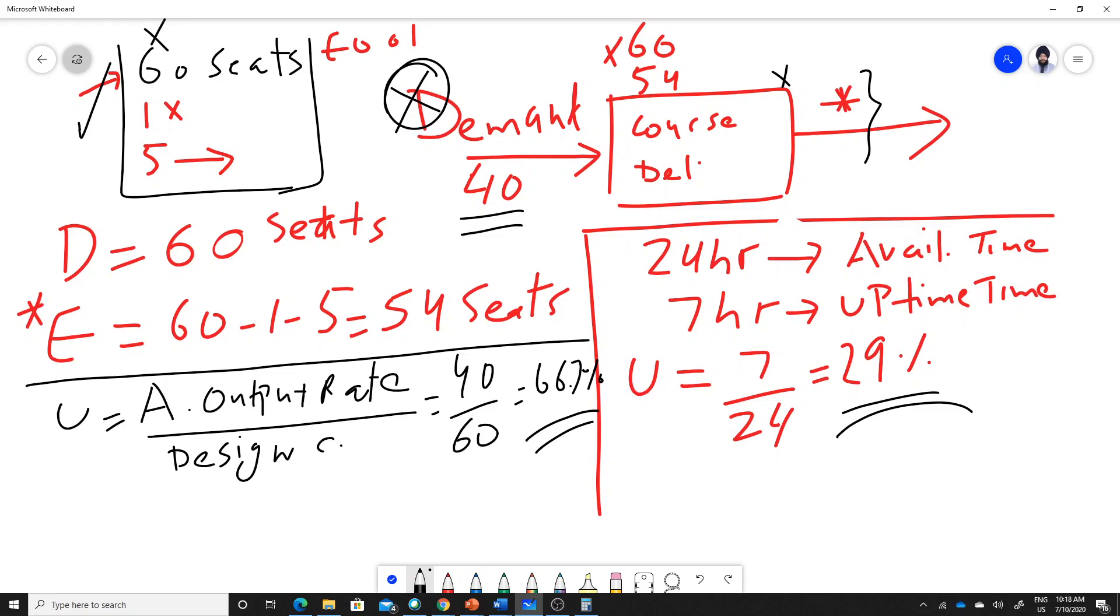Let's say at Tim Hortons you have two manned tills where you place an order. At a given point, the design capacity is two tills.